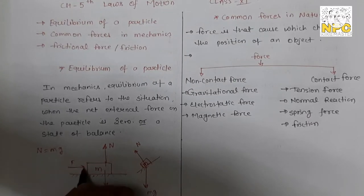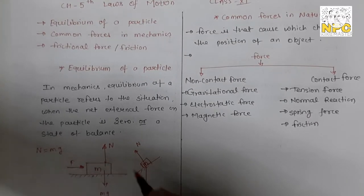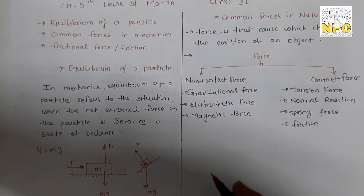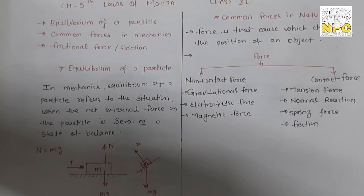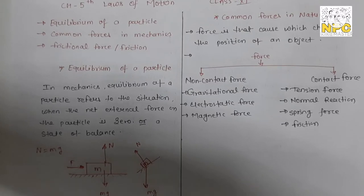If you apply a force to the body and the body remains balanced, it means there is an opposite force acting on it. That is what we discuss in the next slide — the friction force, which is our applied opposing force. So this is the concept of equilibrium of a particle.